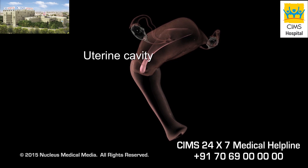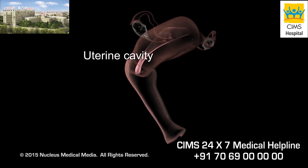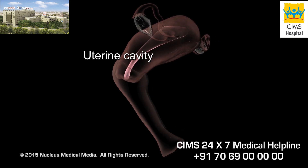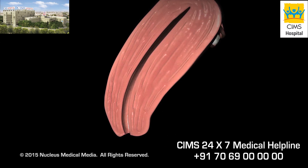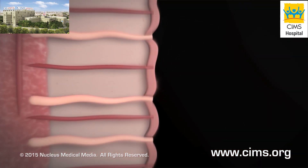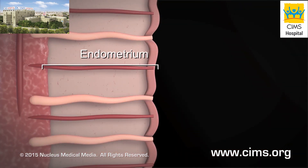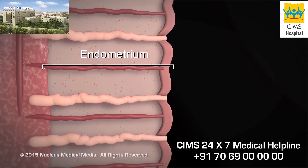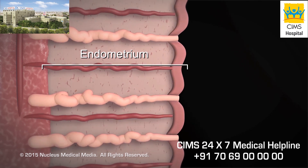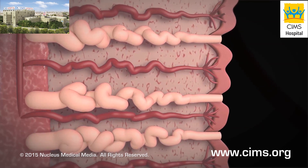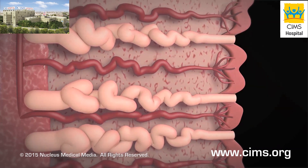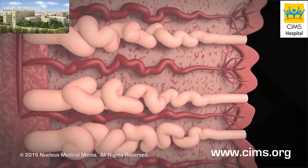The uterus is a hollow organ in your lower abdomen, where a baby grows during pregnancy. Each month during a woman's childbearing years, the inner layer of her uterus, called the endometrium, builds up with extra blood and tissue to prepare for pregnancy.